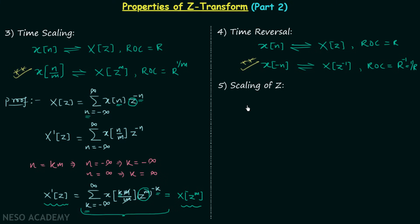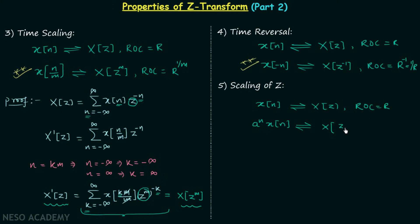Now we will move on to the fifth property, which is the scaling of Z. I will first give you the property and then we will prove it. Signal X(n) has Z transform X(z) with region of convergence R. If we multiply a^n to our signal X(n), we get a new signal a^n·X(n), and for this new signal the Z transform will be X(Z/A), with the region of convergence equal to |A| multiplied by the old region of convergence R.